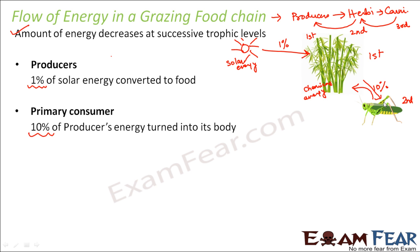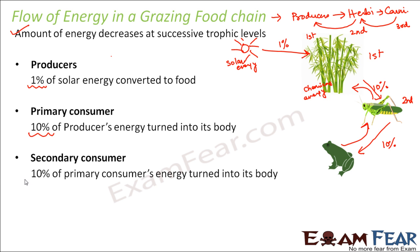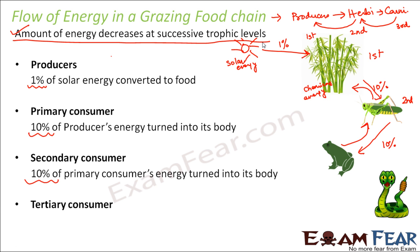This arrow indicates the transfer of energy — only 10% of the energy stored in the plant gets transferred to the grasshopper. Then comes the secondary consumer: the frog will eat the grasshopper, and the energy passed on to the frog will be 10% of what was stored in the grasshopper's body. At each trophic level the amount of energy is gradually decreasing, and as you go toward higher trophic levels it keeps on reducing further.